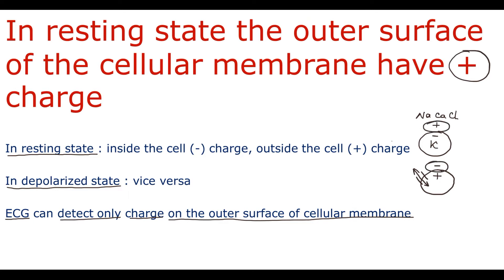Basically when we use the phrase 'cell has positive charge,' we mean the positive charge on the outer surface of the cell membrane, because ECG can detect charge only on the outside of the cell.